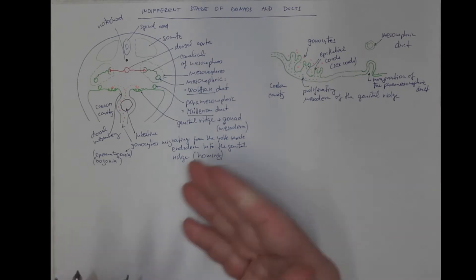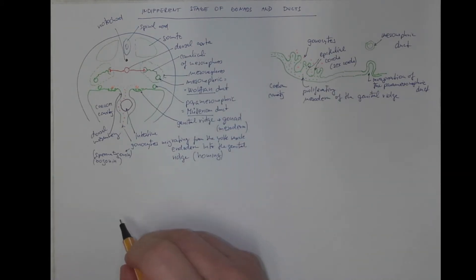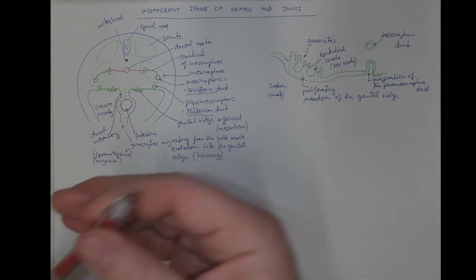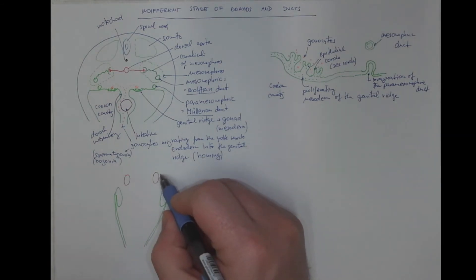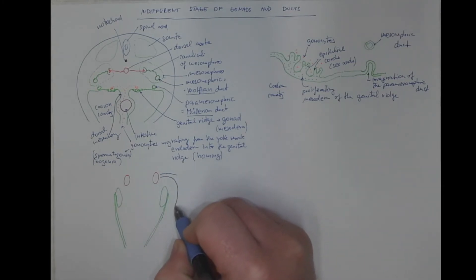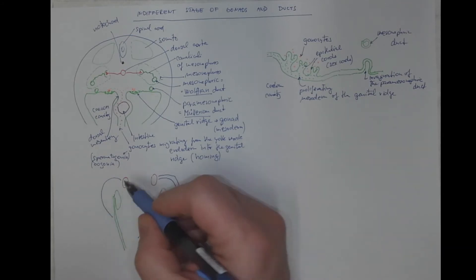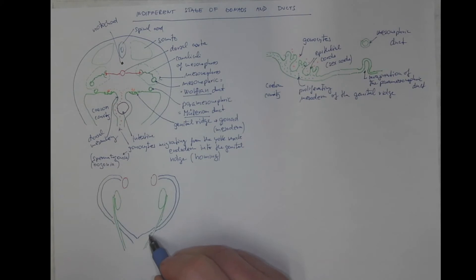The next scheme will show the relation of the gonads and mesonephros to these ducts. We got the mesonephros and their mesonephric duct. Both left and right mesonephric ducts, they enter the cloaca. We got the gonads that are medially to the mesonephros. And the paramesonephric duct goes from the gonads. At first, it goes laterally. But then, it will cross the mesonephric ducts. And the left and right paramesonephric ducts will join each other. They will fuse.